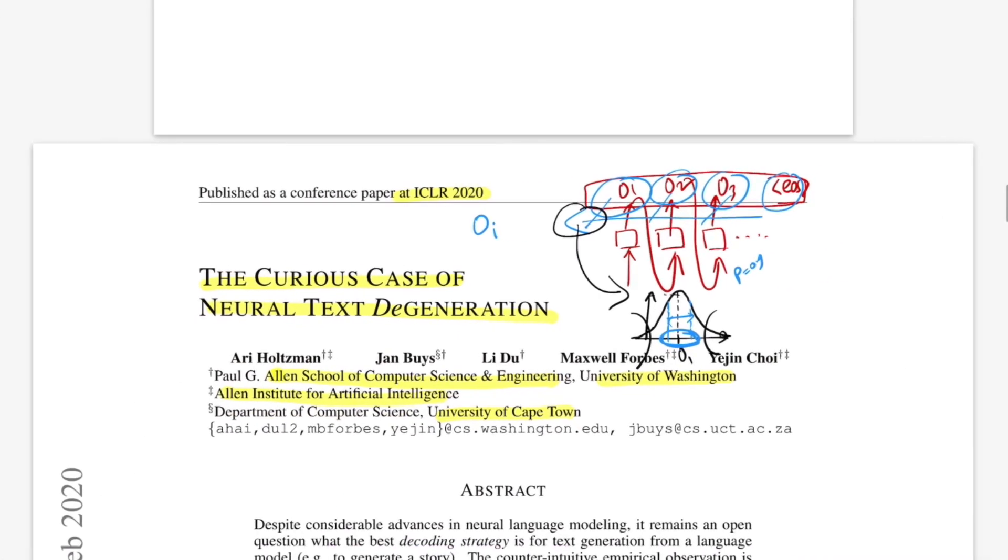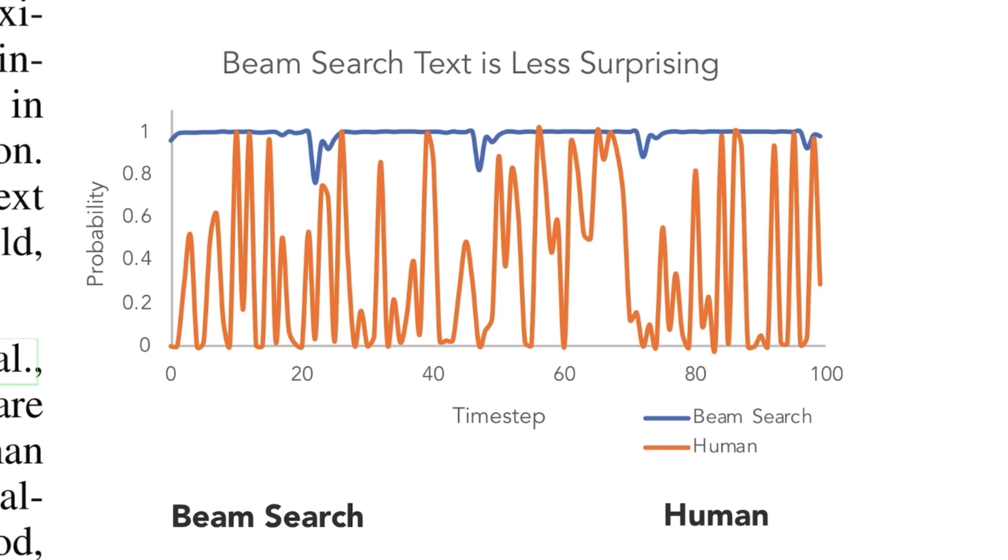In this figure, you can see the relationship between probability and time step. Consider a model M, if you give it context C and ask it to complete next 100 time steps or words. The X axis shows you're trying to generate 100 words, and the fluctuations are the probability at every time step.